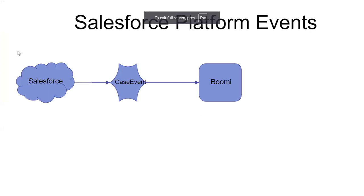For example, take the case where a case gets created in Salesforce. You might want to trigger your process — it means an event happened. Whether it's a Boomi production issue or a customer calling about a product, when a case is created for internal tracking, it will track that request until closure.